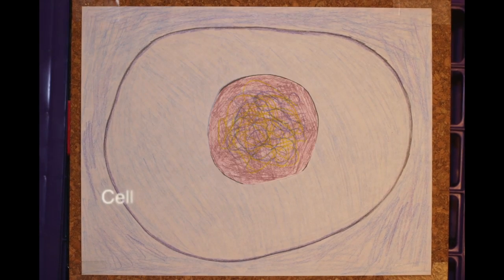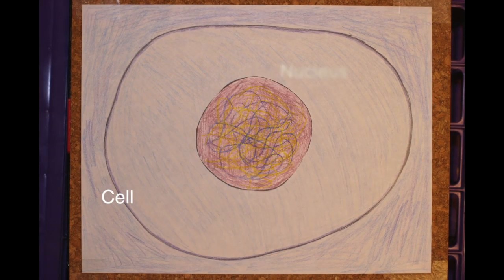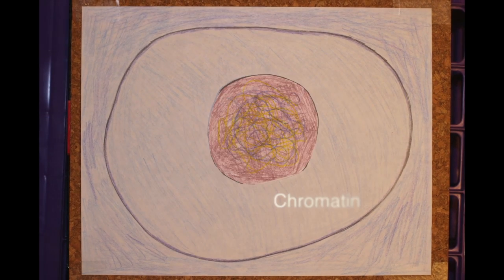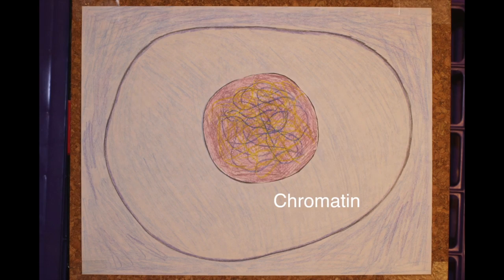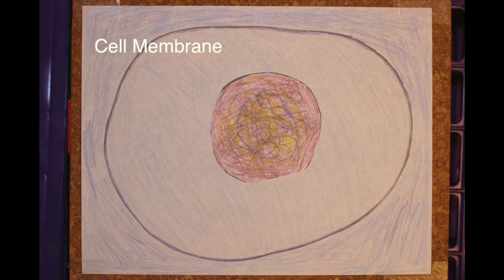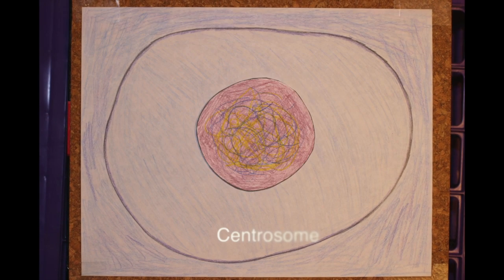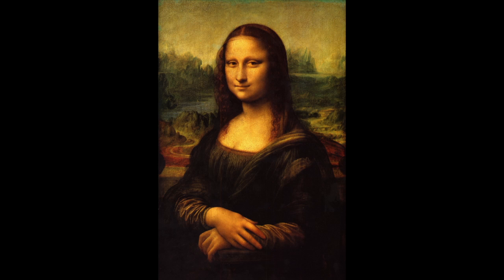This is a cell. The purple dot is the nucleus. The yellow and blue scribbles inside the purple dot are chromatin. Surrounded in the nucleus is the cell membrane. The orange and yellow thing that we will see in a bit is a centrosome. And this is the Mona Lisa.